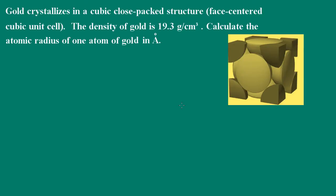Hi, this is Dr. O'Connor. Welcome to Pathways to Chemistry. Here we're told that gold crystallizes in a cubic close-packed structure, which is almost identical to a face-centered cubic unit cell. We're given the density of gold and asked to calculate the atomic radius of one atom of gold in angstroms. Remember, an angstrom is equal to 10 to the negative 10 meters.